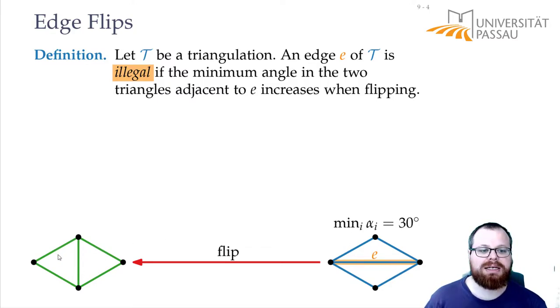Here we also had 6 angles, but the minimum of them is 60 degrees. That means we improved locally the angle vector by flipping this edge to this one. So this is an illegal edge.